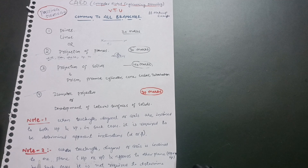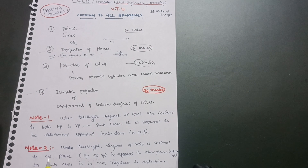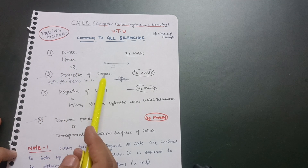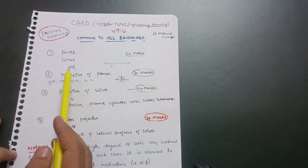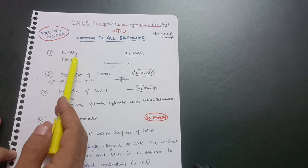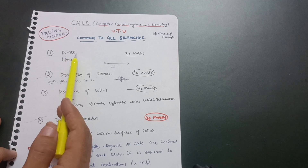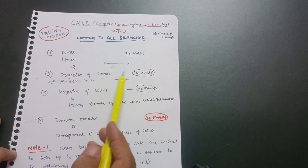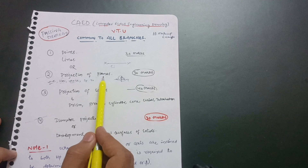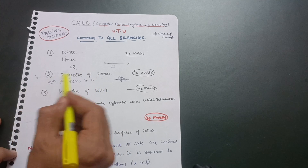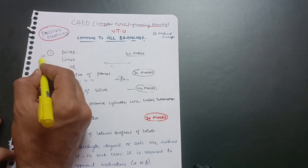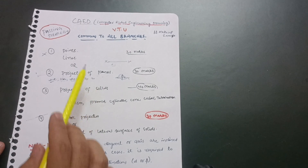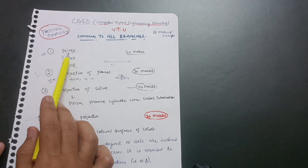I will discuss notes from this subject to clear up any confusion. First, there are three topics: projection of points, projection of lines, and projection of planes. Among these three you can choose any one. Projection of planes is comparatively easier, so you should focus on that and leave the points and lines part.